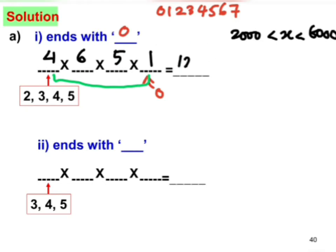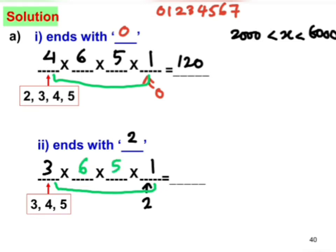If the number ends with two: two occupies the last place — one way. For the first place, only three, four, and five can be used (since 2000 is already taken by the last digit) — three ways. We've taken out two digits leaving six for the second place and five for the third. Multiplying gives 90.